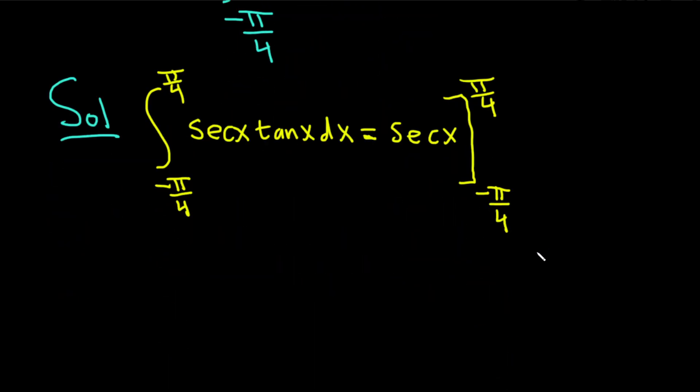We always want to plug in the top number first. So this will be the secant of pi over 4 minus the secant of negative pi over 4.